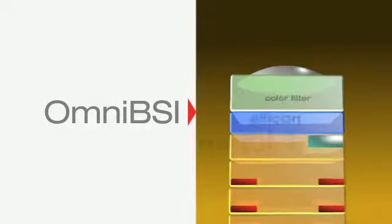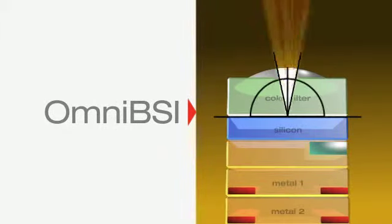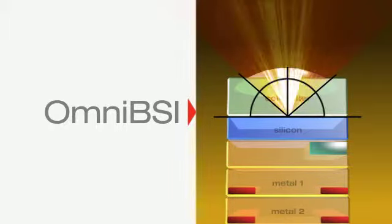Omni BSI CMOS sensors also enjoy a more aggressive chief ray angle, allowing shorter lens heights and therefore thinner camera modules that drive the next generation of advanced ultra-thin camera phones.